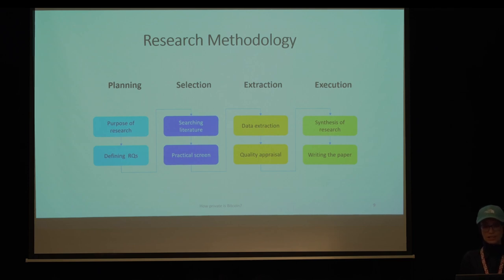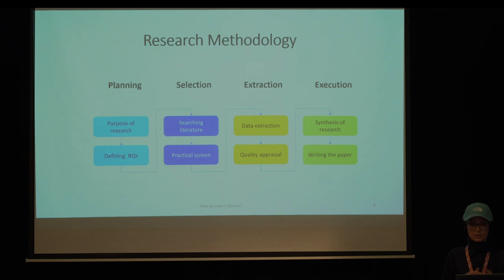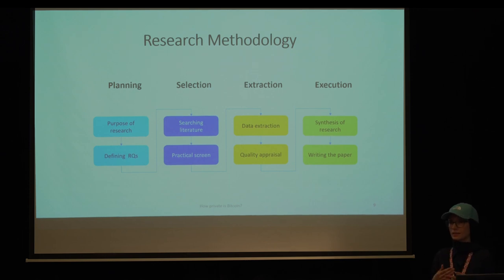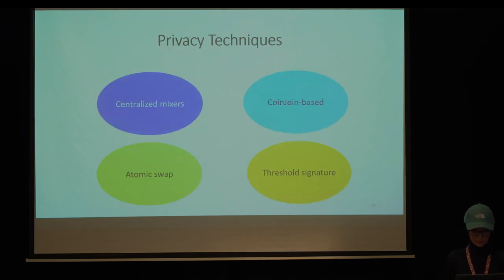This slide shows our research methodology for the systematization of knowledge. We first defined the research questions and then searched scientific databases with keywords. In total we obtained 869 papers, then we filtered papers based on titles and abstracts, and ultimately evaluated 21 privacy protocols in our paper.